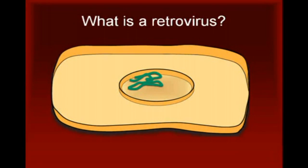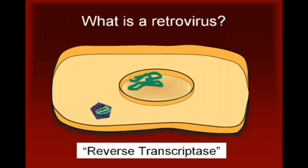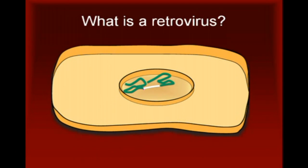What exactly is a fossil retroviral genome? Retroviruses are viral particles that reproduce inside host cells through the use of an enzyme called reverse transcriptase. This enzyme transcribes the virus's RNA genome into DNA that is then inserted into the host DNA. In this way, retroviruses manage to evade the body's natural defense mechanisms as they make new copies of themselves.